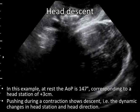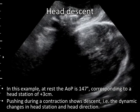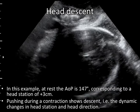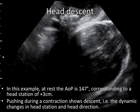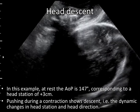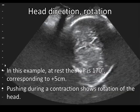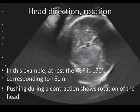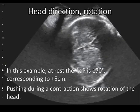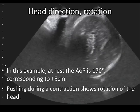Head descent can also be measured dynamically. In this example, at rest, the angle of progression is 147 degrees, which corresponds to a head station of plus three centimeters. Pushing during a contraction shows descent — that is, the dynamic changes in head station and head direction. In a second example, the angle of progression at rest is 170 degrees, corresponding to a head station of plus five centimeters. Pushing during a contraction shows rotation of the head.